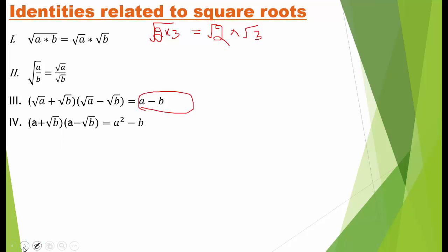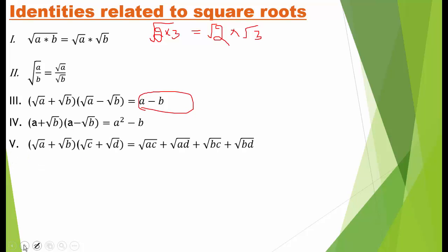The fourth identity: a plus root b, multiplied by a minus root b. Again, this is x plus y times x minus y, which gives a squared minus b, because the square of root b is b. The fifth identity: root a plus root b, multiplied by root c plus root d, equals root ac plus root ad plus root bc plus root bd.